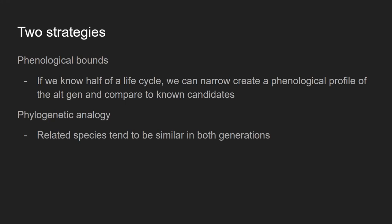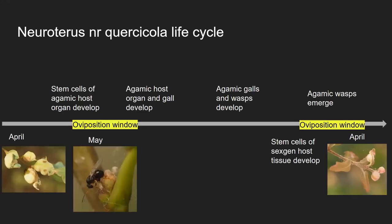The other strategy we can take advantage of now is phylogenetics — using genetic sequencing to compare sequences and determine the relatedness of different groups, connecting two different galls we would not otherwise have realized had anything to do with each other. Then we can say: because agamic galls in this group tend to look like this, and it's related to a sexual generation gall that looks like that, maybe the sexual generation that's missing here also looks like that.